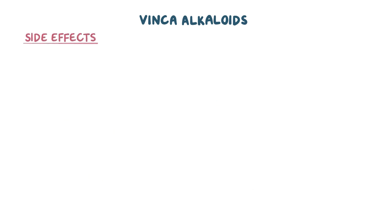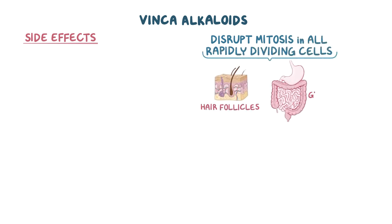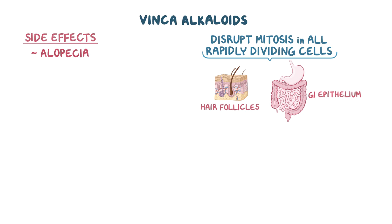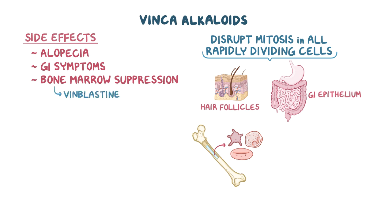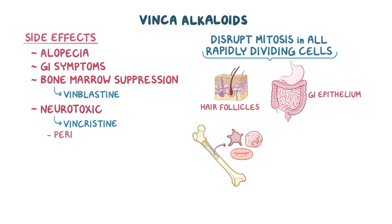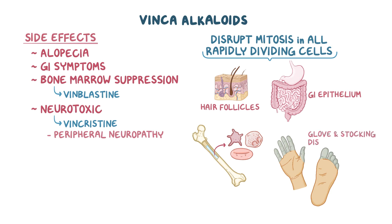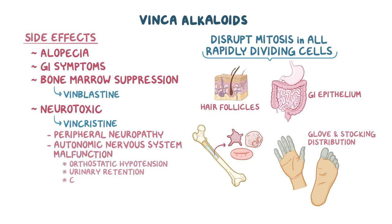Vinca alkaloids disrupt the progression of mitosis in all rapidly dividing cells in the body, including hair follicles and gastrointestinal epithelium. So vinblastine and vinorelbine cause alopecia and gastrointestinal symptoms. They are also associated with bone marrow suppression, since the cells here are constantly making platelets, red, and white blood cells. Vinblastine causes more bone marrow suppression, but vincristine is more neurotoxic, manifesting as peripheral neuropathy with decreased sensation in a glove and stocking distribution, as well as autonomic nervous system malfunction with orthostatic hypotension, urinary retention, and constipation.